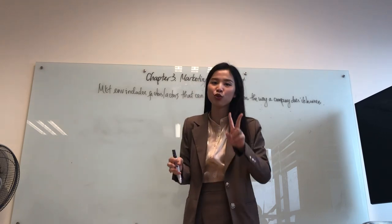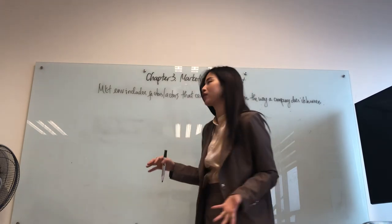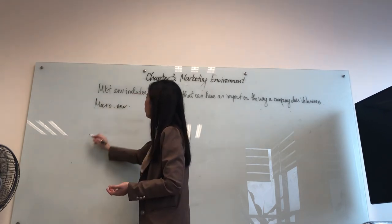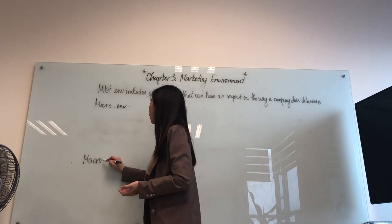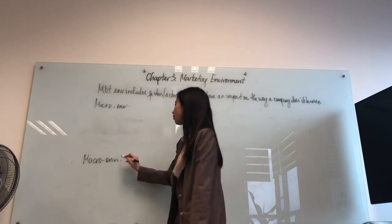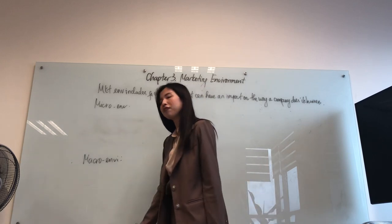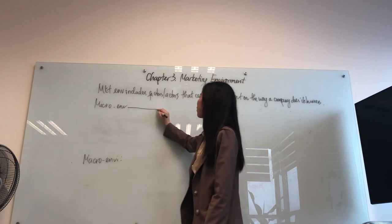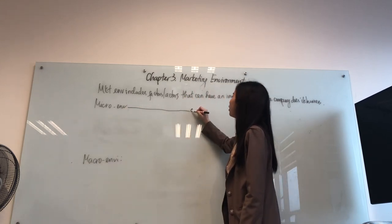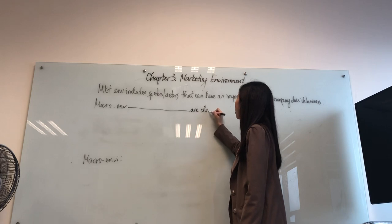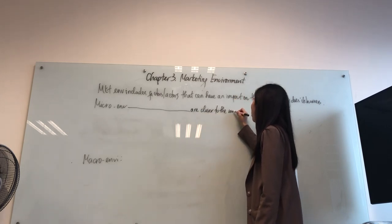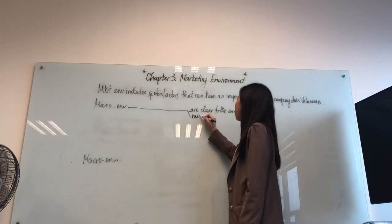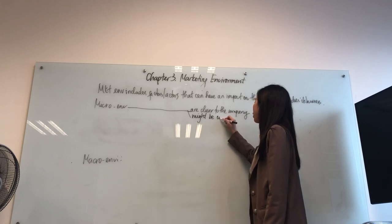To make it easier to study the market environment, it is defined into two very big groups. We have the micro environment and we also have the macro environment. The micro environment includes factors and actors that are closer to the company, and because they're closer, they might be able to be controlled.